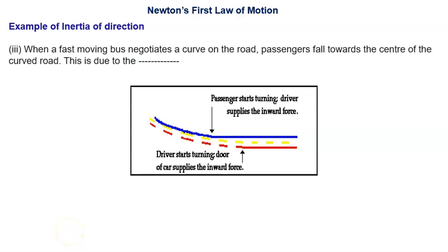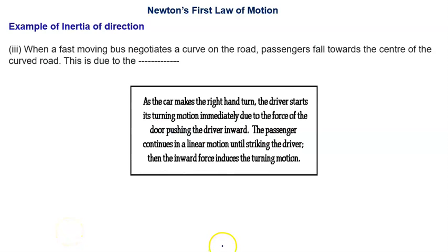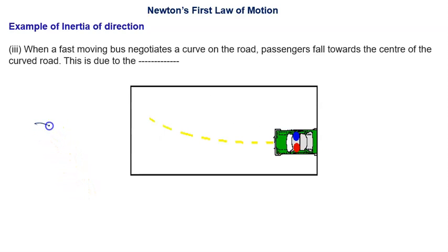An example of inertia of direction: when a fast-moving bus negotiates a curve on the road, passengers fall toward the center of curvature of the covered road. What is the reason behind it?